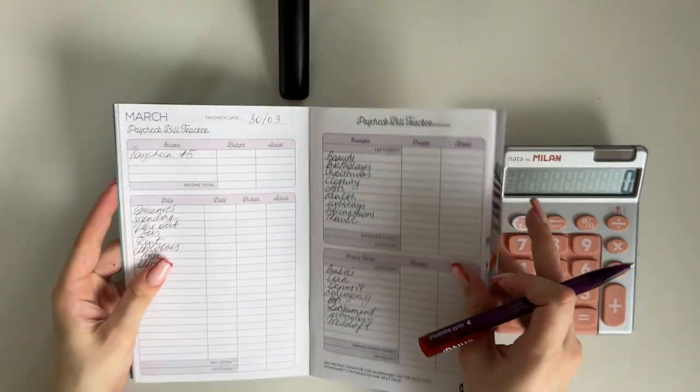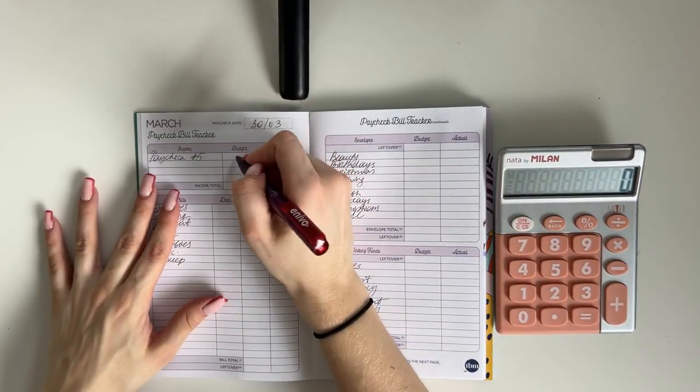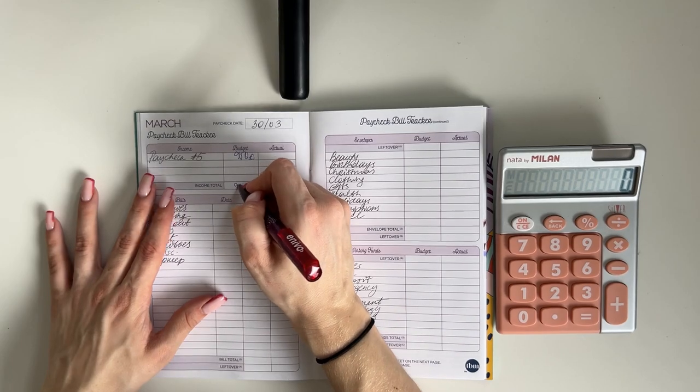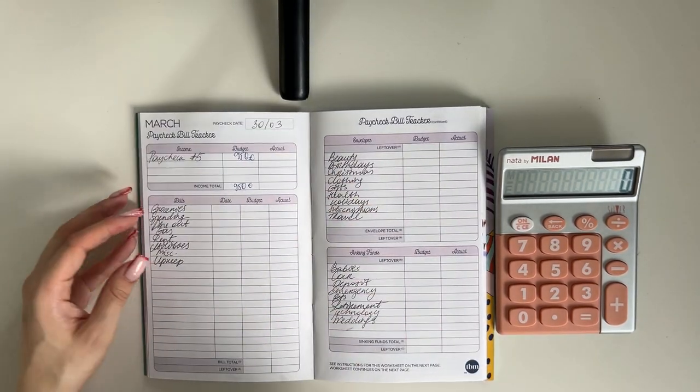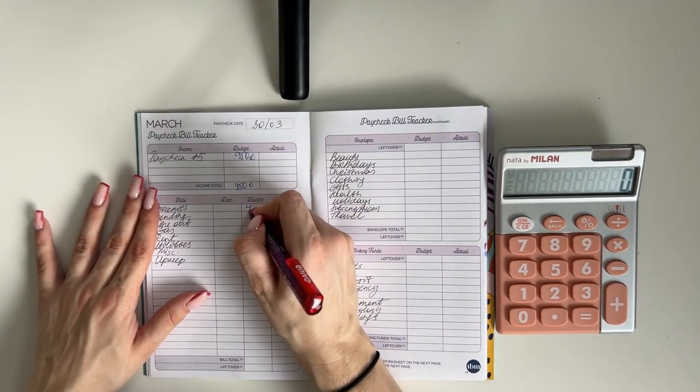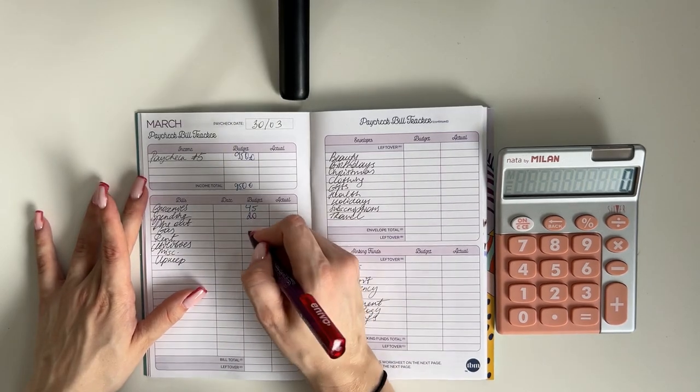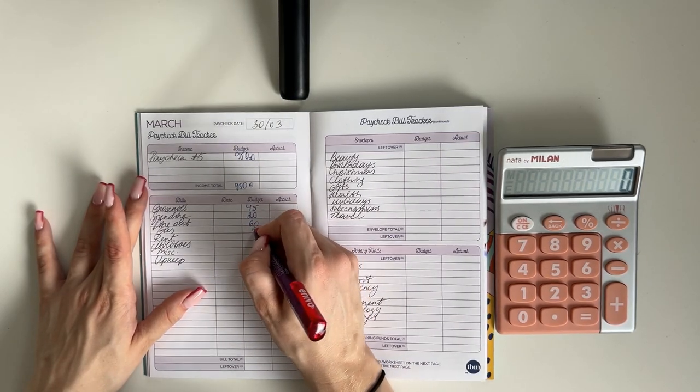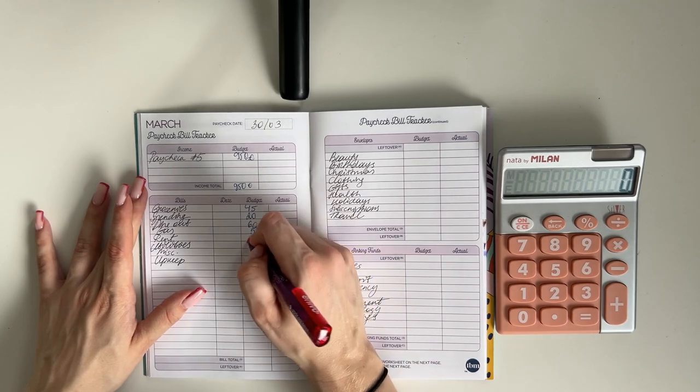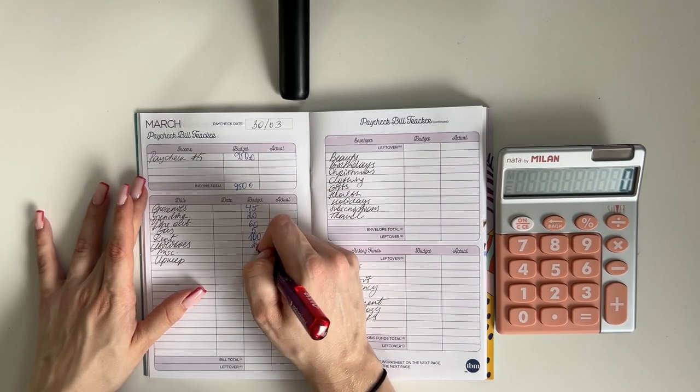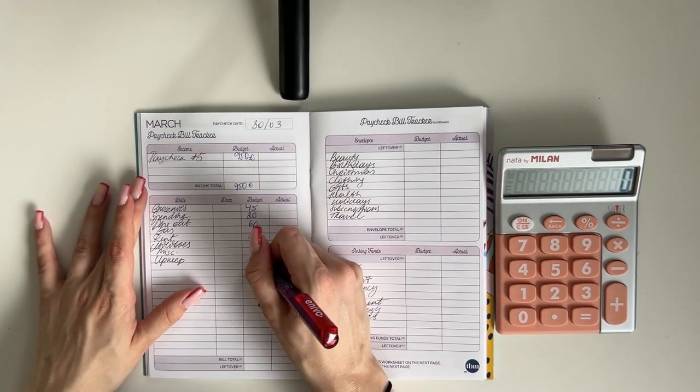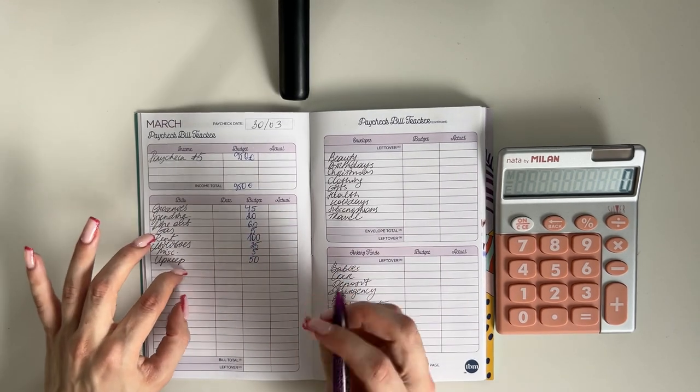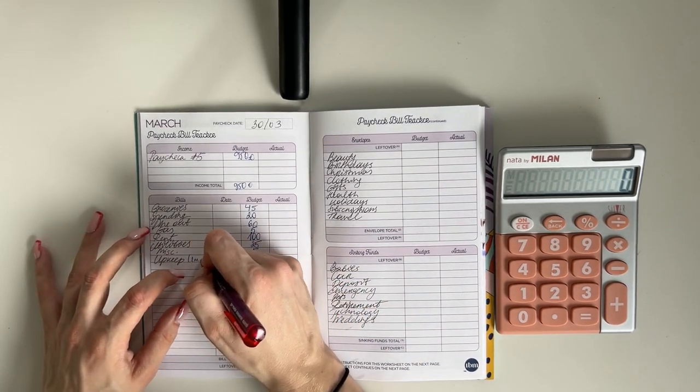Perfect, that was for this week. And now for the last week of the month, let's see. Okay, so we have 950 euros to work with this week. So groceries is going to get 45, spending 20, dine out 60, gas is going to get five, rent 100, utilities 25, five is going into miscellaneous, and 50 we're putting in upkeep, aka one month ahead.